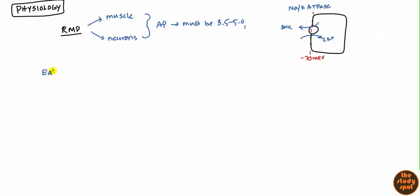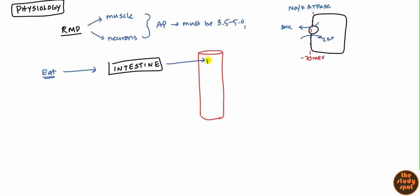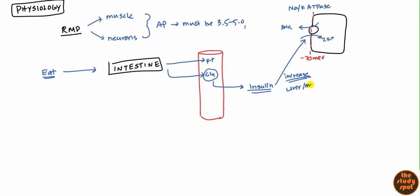When you eat — say you eat a banana, which has potassium — that potassium will go into your intestines and from there make its way into the blood. Not only do you absorb the potassium from the intestine, but you also absorb glucose. Glucose will activate insulin, and insulin is important because not only does it cause uptake of glucose into skeletal muscle and liver, but it also activates sodium-potassium channels — increasing how many sodium-potassium channels you have, particularly in the liver and muscle.